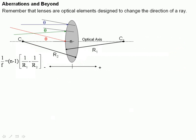So let's look at aberrations. An aberration just means that something doesn't behave the way you expect. Remember that lenses are optical elements that are designed to change the direction of a ray.